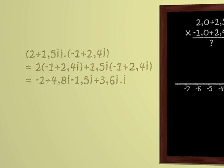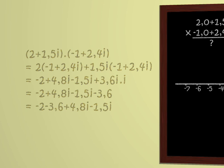But i squared is minus 1, since we invented i for this purpose. So we get minus 2 plus 4.8i minus 1.5i minus 3.6. And tidying up, that gives us minus 2 minus 3.6 plus 4.8i minus 2.5i, giving us in all, minus 5.6 plus 3.3i. There you are. We know how to multiply complex numbers.